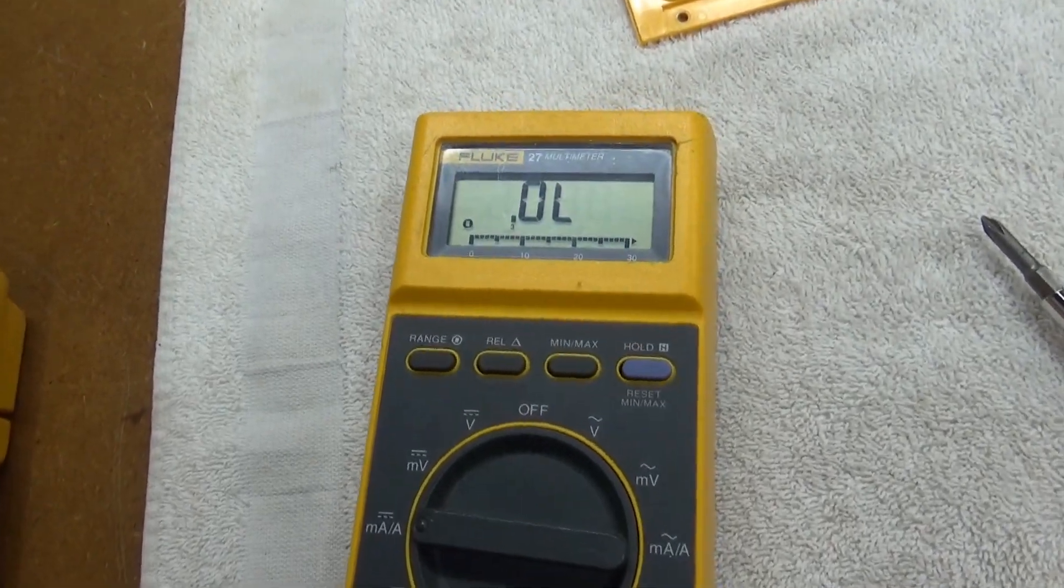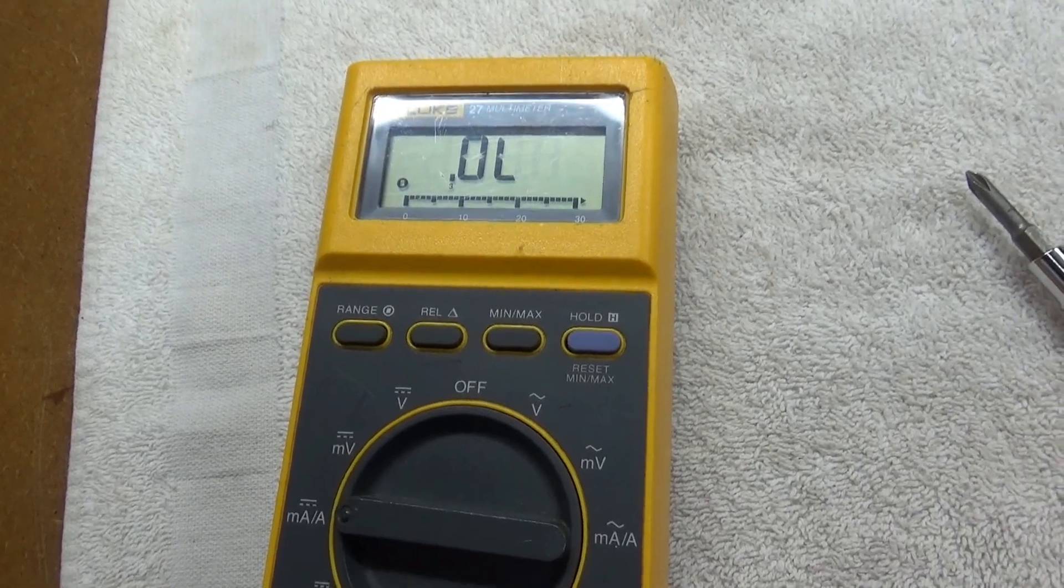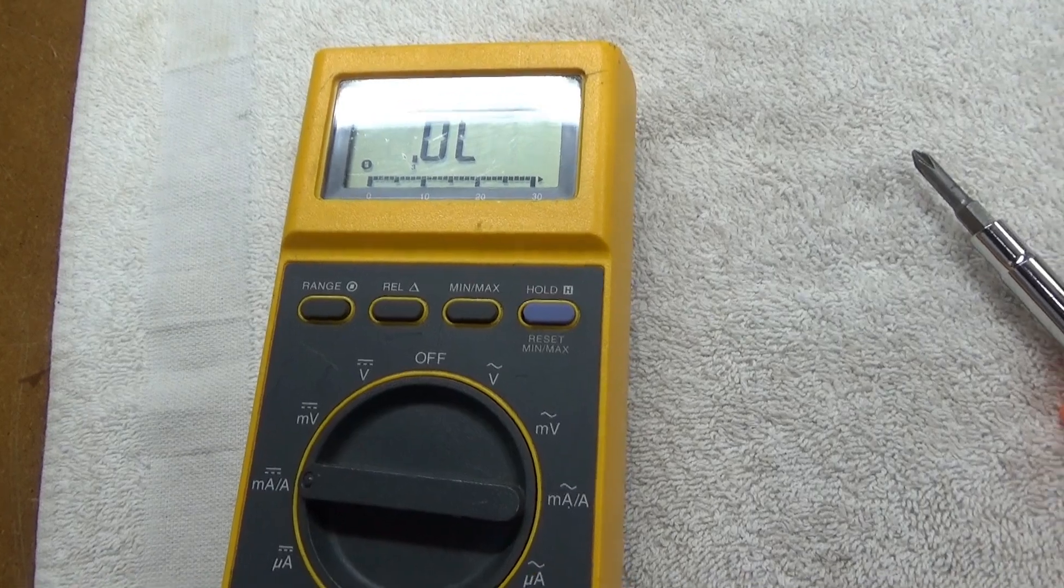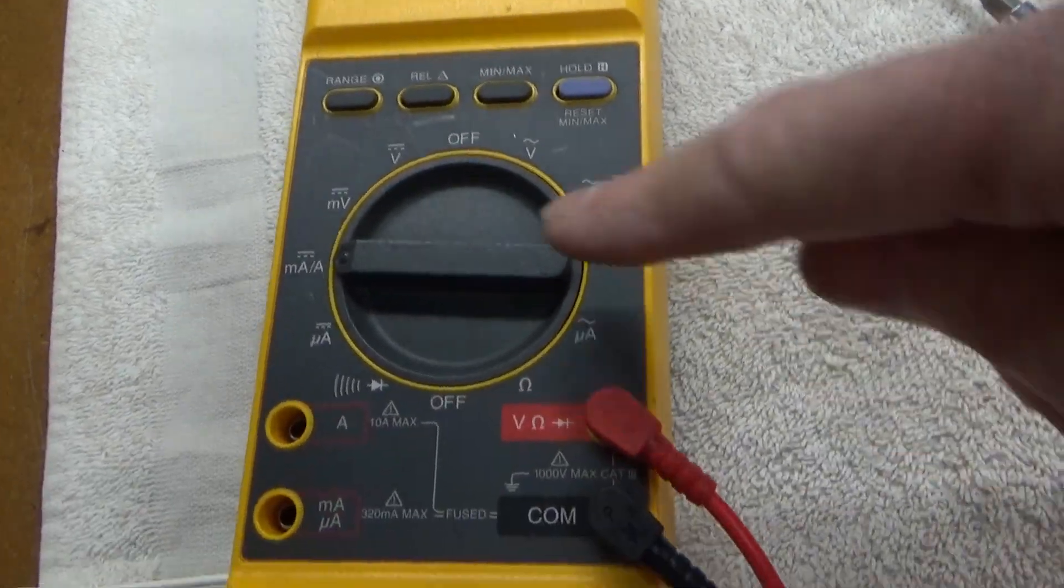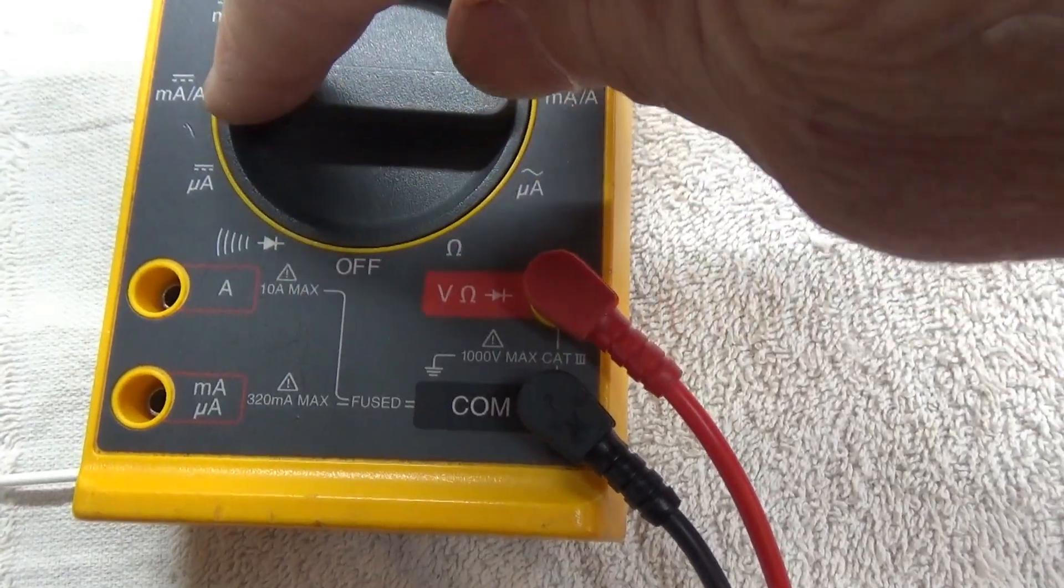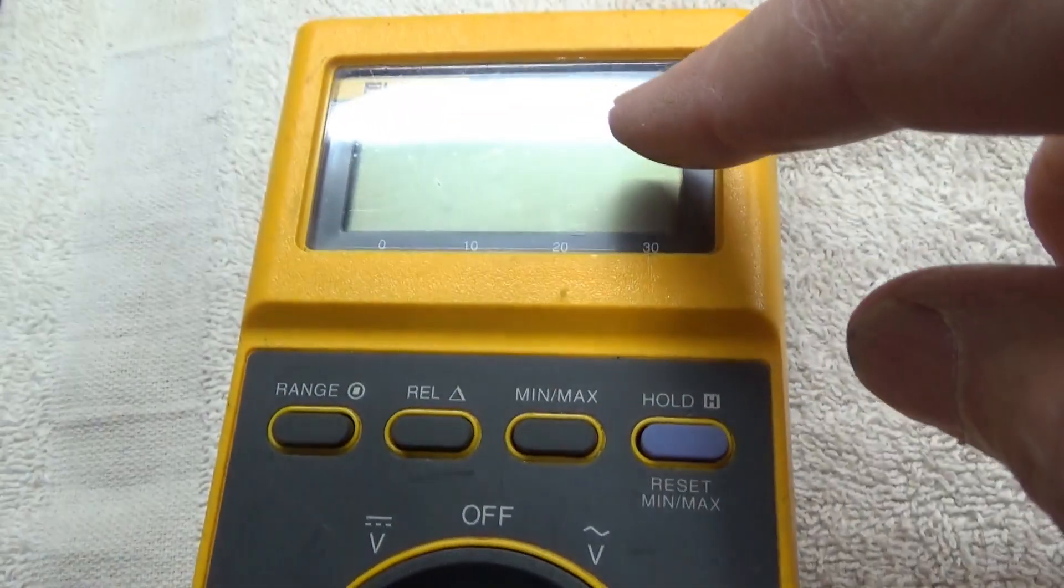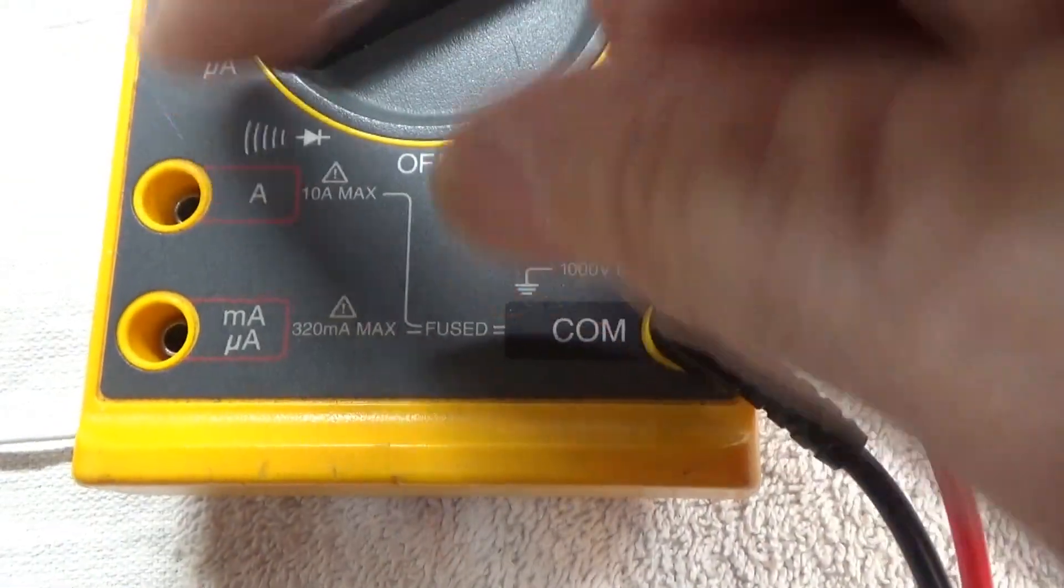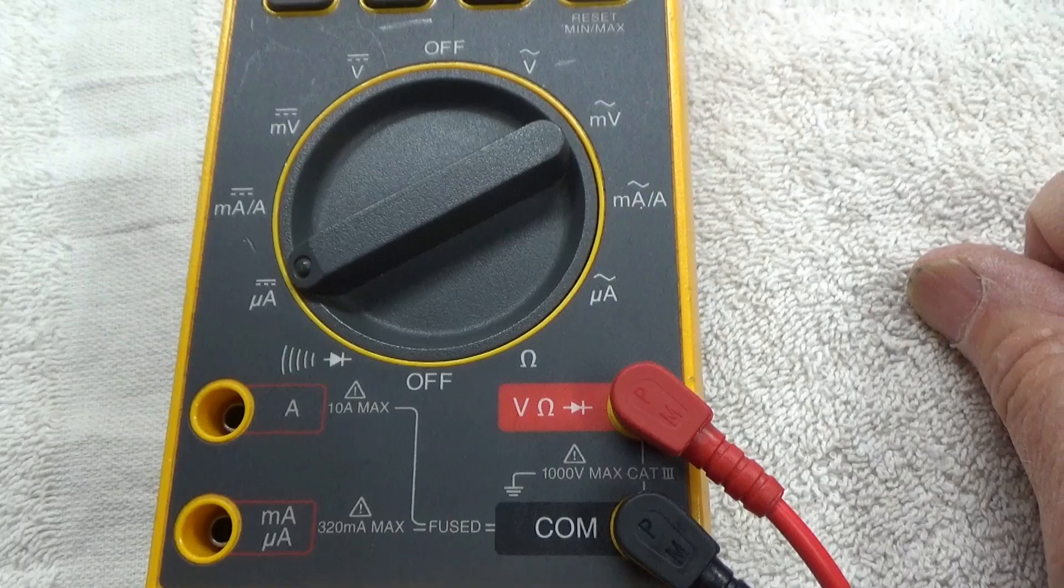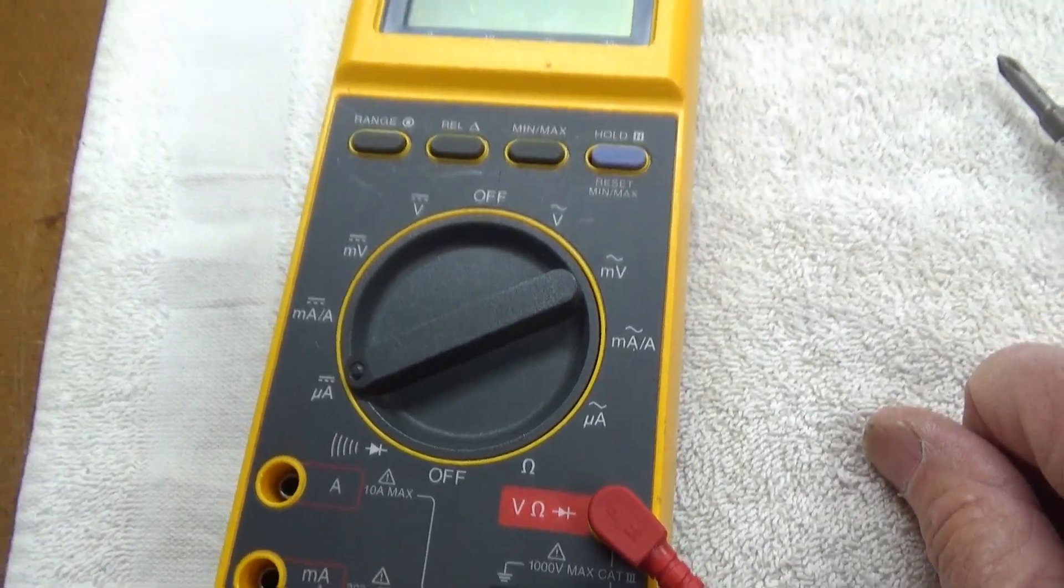All right, looks like I may have fixed this. It's back on diode and beeper mode again. The beeper mode is actually working. My problem is I'm two clicks off, it should be down here. You see I turned it off, and it still says microamps. So I've got to correct that and get that thing off a little bit. Let me take it back apart and fix that.